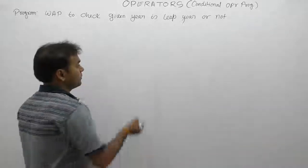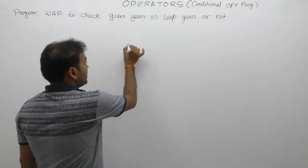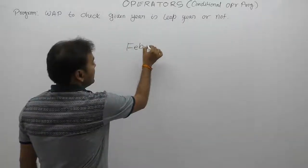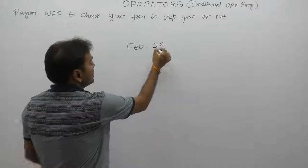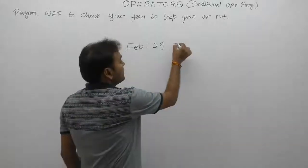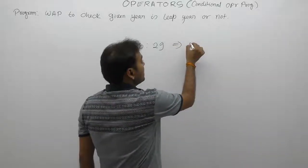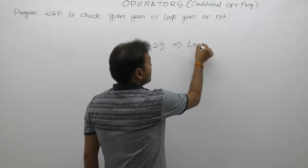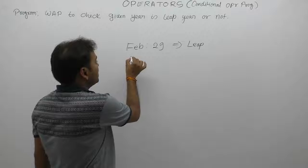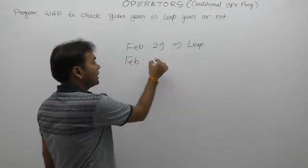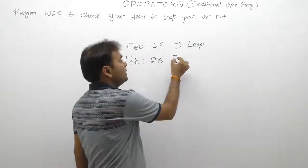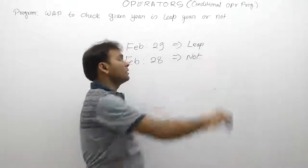If any year having 29 days in their February month, then this year is leap year. Yes, year is leap year. If any year in a particular month, the number of maximum days is 28, then year is not a leap year. This is the case.